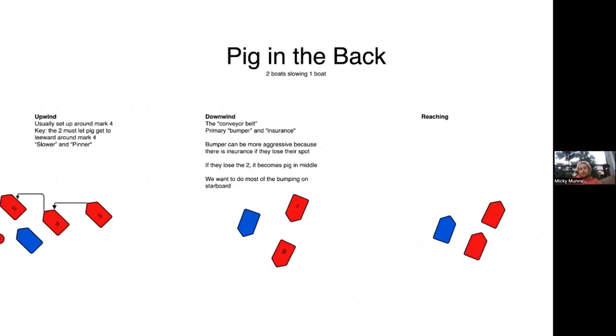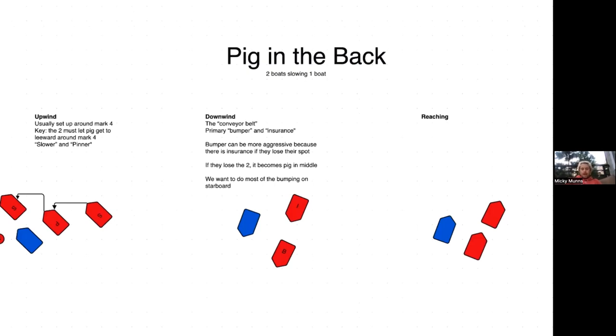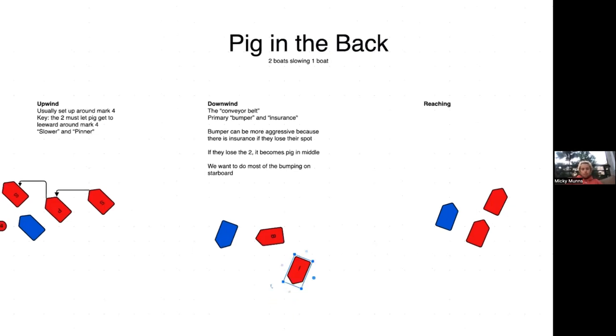Downwind, how do we do it? Well it's a conveyor belt. We have a bumper and an insurance. What having two boats does essentially is the bumper can be way more aggressive because if they over bump and push push push doing a great job bumping, and they break and somehow they catch a big puff and get down in front, this whole time the insurance has just been sailing fast. And now the conveyor belt continues and the insurance is going to come up and go ahead and bump again. While one boat is bumping, the other boat is sailing fast, and we just continue.